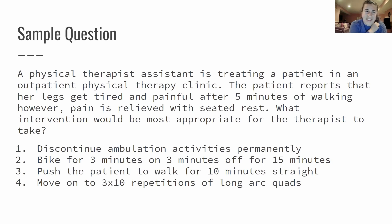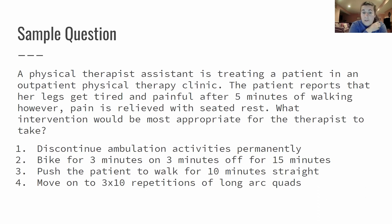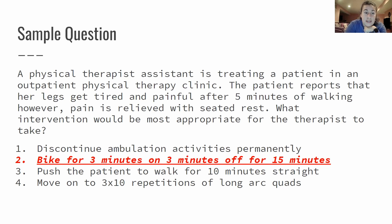Sample question: A physical therapist assistant is treating a patient in an outpatient physical therapy clinic. The patient reports that her legs get tired and painful after five minutes of walking; however, pain is relieved with seated rest. What intervention would be most appropriate? One, discontinue ambulation activities permanently. Two, bike for three minutes on, three minutes off for 15 minutes. Three, push the patient to walk for 10 minutes straight. Or four, move on to three by 10 repetitions of long arc quads. The answer is number two - bike for three minutes on, three minutes off for 15 minutes.